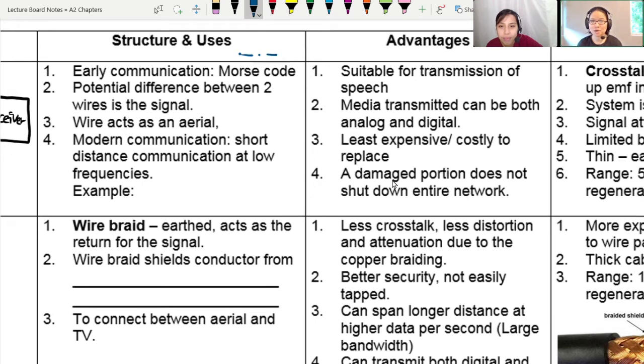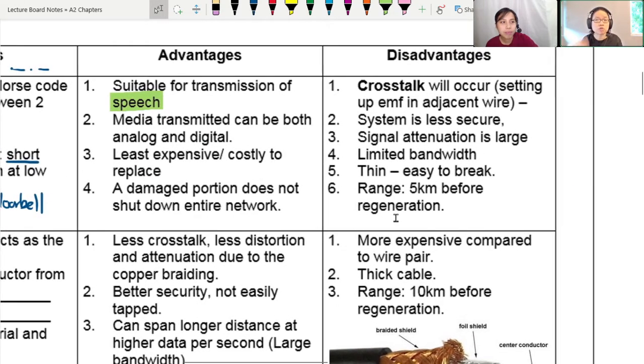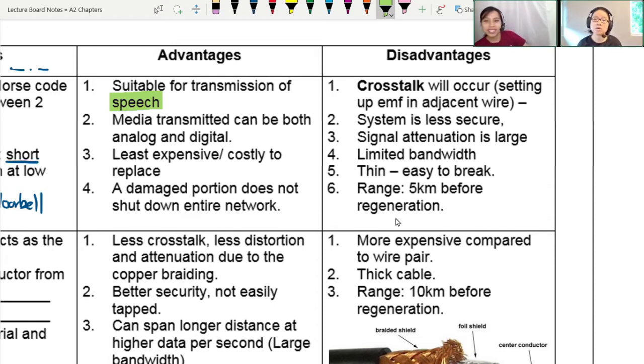So we tend to use wire pair in early communication times, mainly for Morse codes. And the potential difference between the two wires is the signal. And the wire itself will act as an aerial. That's why your wires, your 3.5mm jack wires are always wrapped in some insulator, so it doesn't accidentally interfere with some random signal on the outside. And for modern communication, we still use it for short distance communication at low frequency. So like right now, I'm plugged into my laptop, it's pretty short distance, so it works. It's cheap. So examples are like a regular old microphone. We also use this for doorbells.